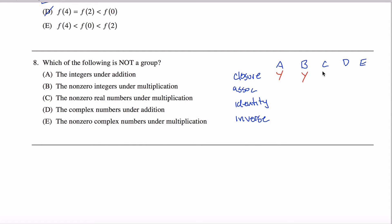The non-zero real numbers under multiplication: yes, by the same logic — you take a real number, multiply it by another real number, you get a third real number. If those first two are non-zero, your third one will be non-zero. The complex numbers under addition: the sum of two complex numbers is another complex number. (A + Bi) + (C + Di) = (A+C) + (B+D)i. You add together two complex numbers, you're guaranteed to get a complex number.